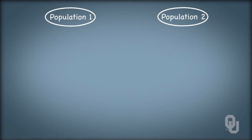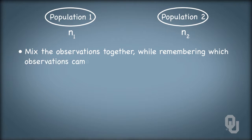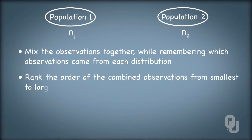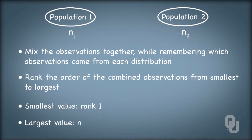And the way that we do this is by collecting a sample of size n1 from population one, and a sample of size n2 from population two. We mix all of the observations together, though we remember which observations came from each distribution. We rank order the combined observations from smallest to largest. The smallest value has rank one, and the largest value has rank n1 plus n2. Tied observations, if they occur, are assigned ranks equal to the average of the ranks of the tied observations.